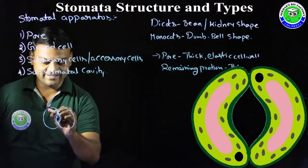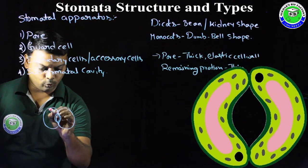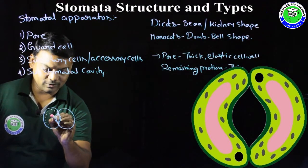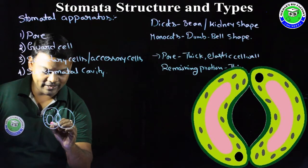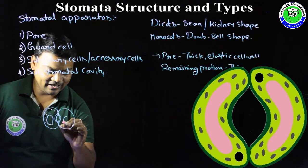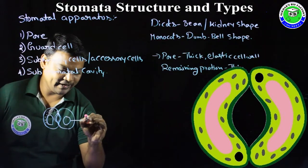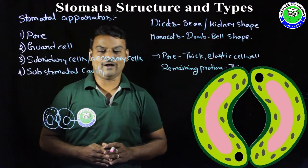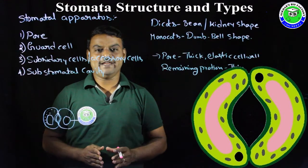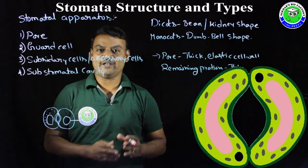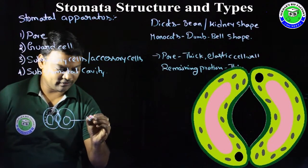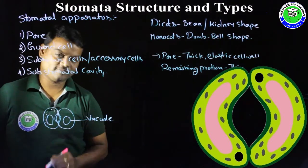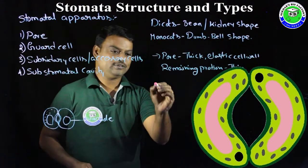Inside each guard cell there is a protoplasm, and within this protoplasm one large vacuole is present. This vacuole helps in the opening and closing of stomata by maintaining osmotic pressure.